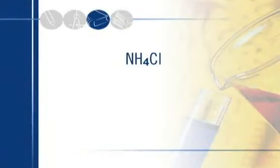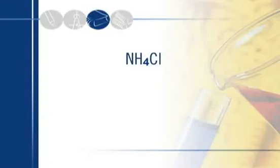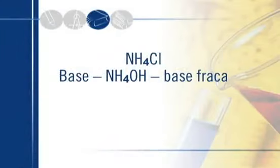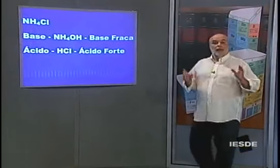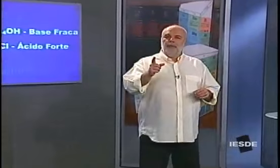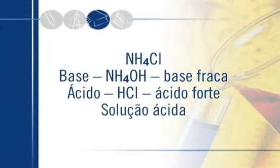Terceiro sal: NH₄Cl, cloreto de amônio. A base de origem é NH₄OH — na verdade, é amônia, NH₃, que é uma base fraca. O ácido de origem é o HCl, um ácido forte. A base é fraca, o ácido é forte. Há hidrólise? Sim. Quem predomina? Predomina o caráter ácido, o caráter do HCl. Logo: solução ácida, pH menor do que 7.